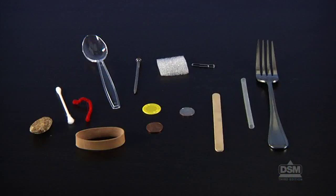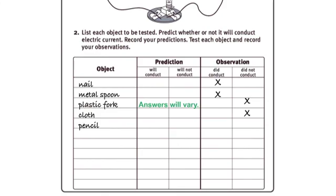Next, distribute the objects to the class and have students predict whether the objects are conductors or non-conductors. Instruct students to share and test all the objects and record the results on their activity sheets.